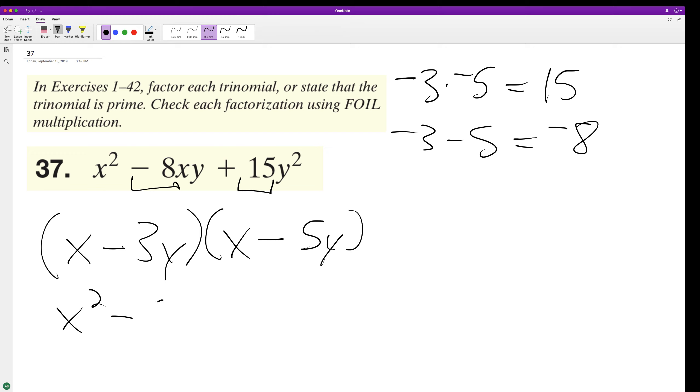So x squared minus 5xy minus 3xy plus 15y squared. Combine like terms, we get x squared minus 8xy plus 15y squared.